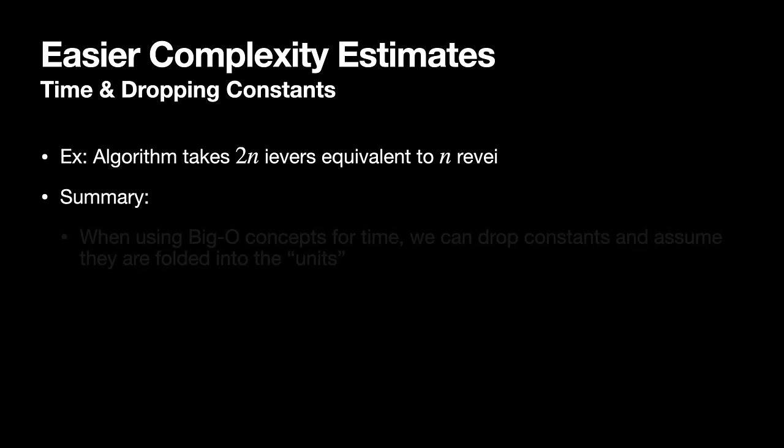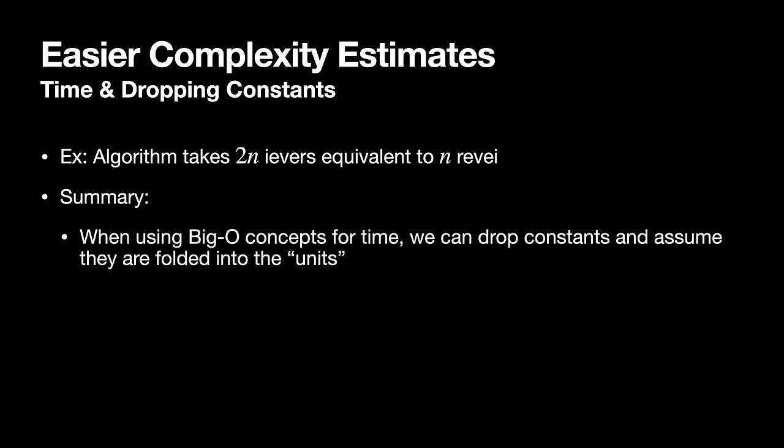So imagine an algorithm takes two eavers. I could say it's equivalent to an algorithm that takes n revi, because remember, two eavers is one revi. So summary here, the big picture: when using the big O concepts for time, we can drop constants and assume that they are folded into the idea of the units, if the constants kind of represent just using a different unit.